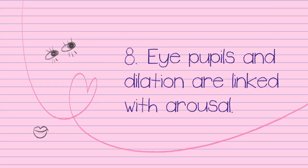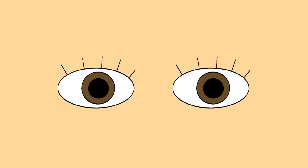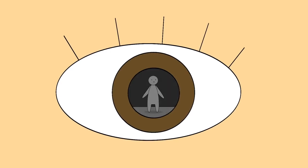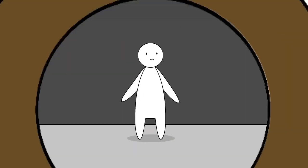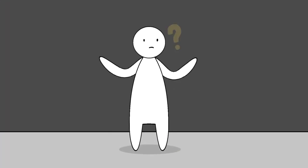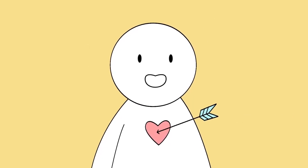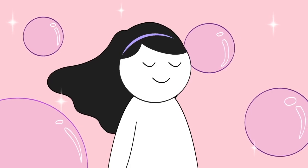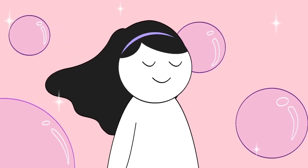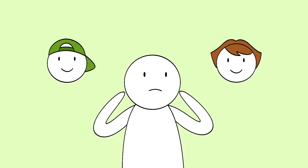8. Eye pupils and dilation are linked with arousal. We all know that eyes are the windows to the soul, but if you stare deep enough into your crush's eyes, you might just get a clue as to whether they're into you. Studies have shown that when people become aroused, their pupils actually dilate. This is actually a pretty good sign of sexual orientation as well. Your eyes will dilate when you look at the gender you are most attracted to.